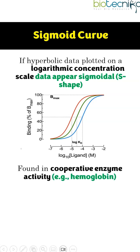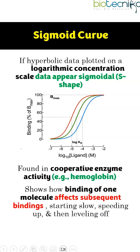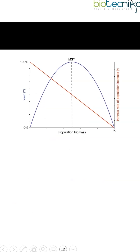This is found in cooperative enzyme activity and hemoglobin, showing how binding of one molecule affects subsequent bindings.